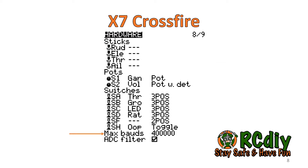On the X7 radios, there is now a setting on the hardware screen to set the maximum board speed. This is to fix problems the X7 was having with Team Blacksheep's Crossfire.